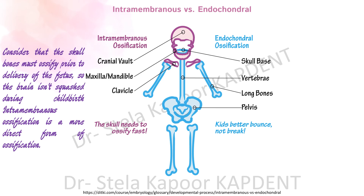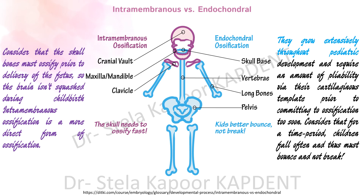For the endochondral type, the mnemonic is 'kids better bounce, not break,' because as kids they grow extensively during pediatric development and their bones require some pliability, which is offered through cartilage. Considering that children fall often, their bones must bounce and not break.